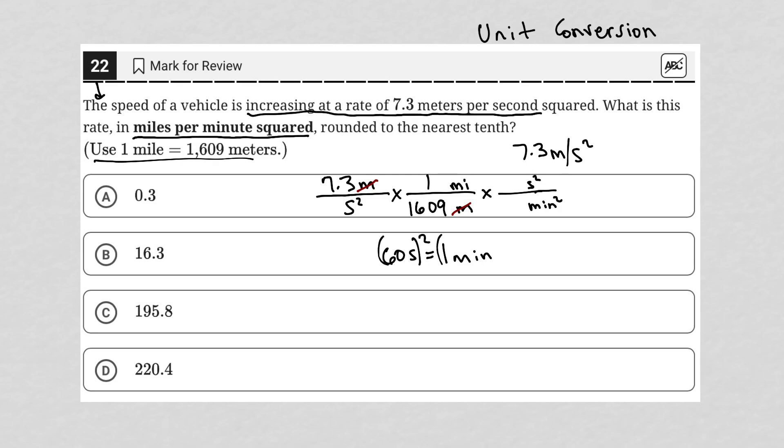60 seconds squared equals one minute squared. But what is 60 squared? It's not just the unit that's being squared, it's also the value that's being squared. So really this says 3,600 seconds squared equals one minute squared. That's the numbers I'm going to use here.